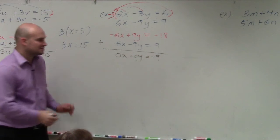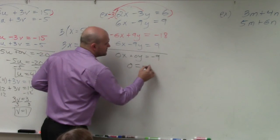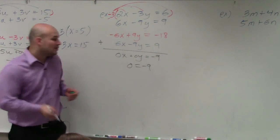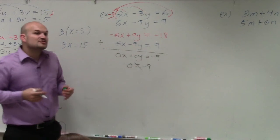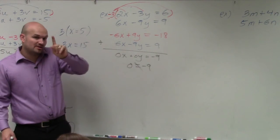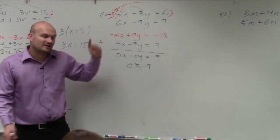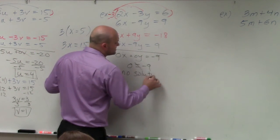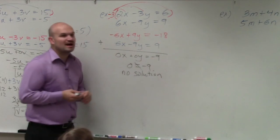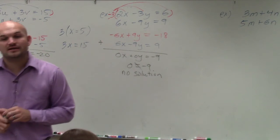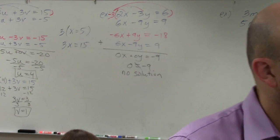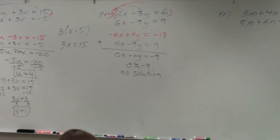Well, 0 times anything is just going to be 0. 0 equals negative 9. Is that equation true? No, that's false. So yeah, we actually, just by trying to eliminate one variable, we ended up eliminating both the variables. So when that happens, we have parallel lines. So if we were to graph them, they would produce parallel lines without an intersection, meaning we would have a system that has no solution, which is also called inconsistency.